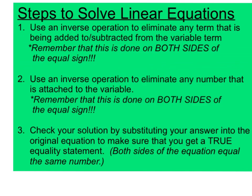Remember, the variable term is the term that has the variable attached to it. Keep in mind that this is going to be done on both sides of the equal sign. If we use an inverse operation on one side to eliminate a term, we have to do the exact same thing on the other side. Step number two is to use an inverse operation to eliminate any number that is attached to the variable. If there's a number attached to the variable, that means we're going to have to multiply or divide as our inverse operation, and again we must do the exact same thing on the other side.